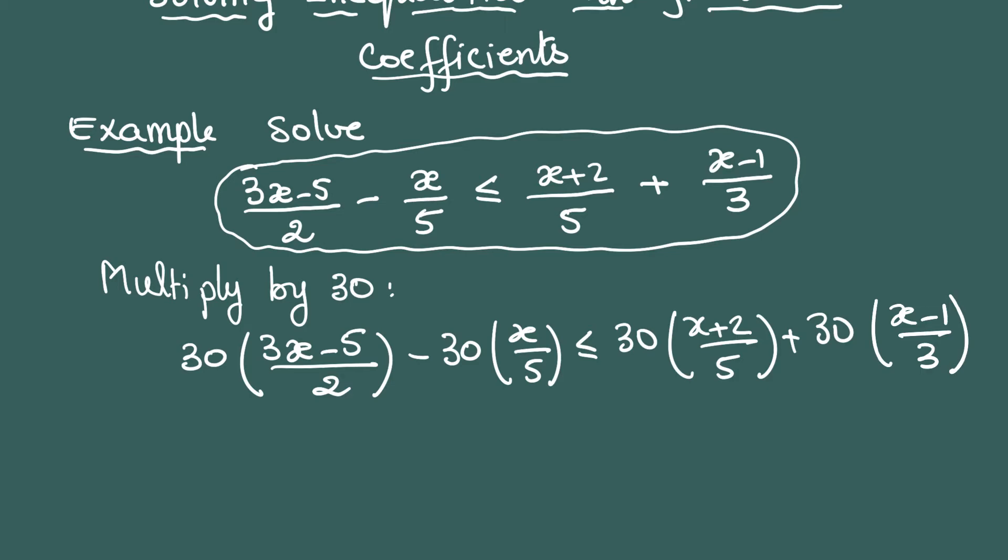30 divided by 2 will give us 15, 30 divided by 5 is 6, 30 divided by 5 is 6, and 30 divided by 3 is 10.